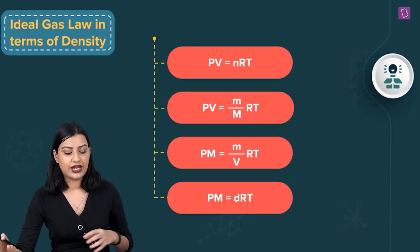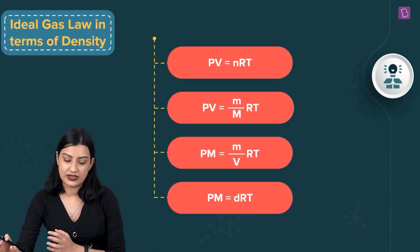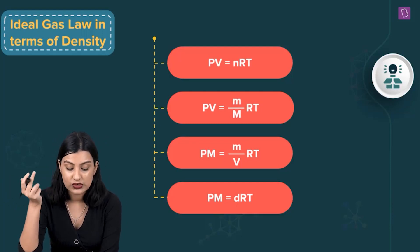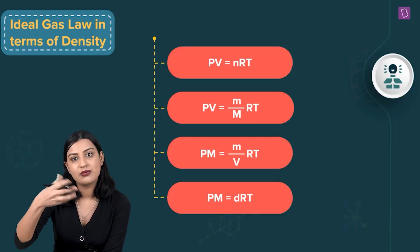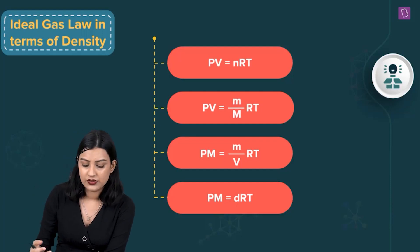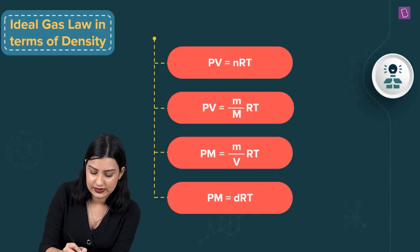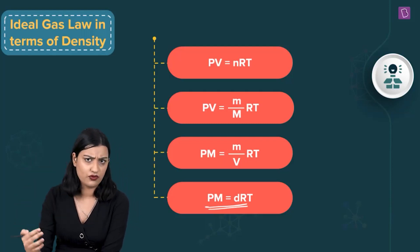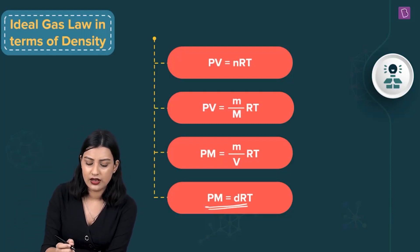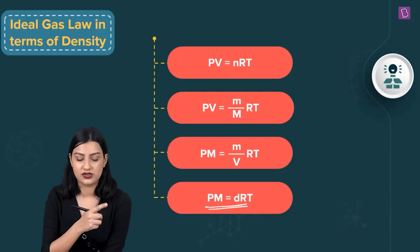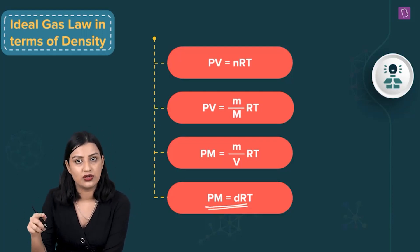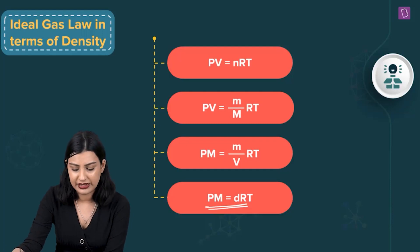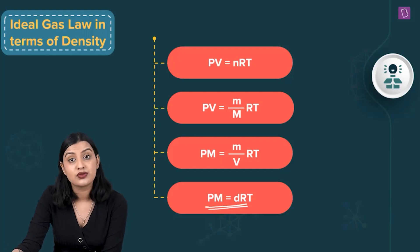We need to use the ideal gas law in terms of density. We know PV = nRT, and we can write n as mass divided by molar mass. Rearranging, mass over volume is density, so we get: pressure × molar mass = density × R × T. We care about this because density is given and we need to find molar mass.